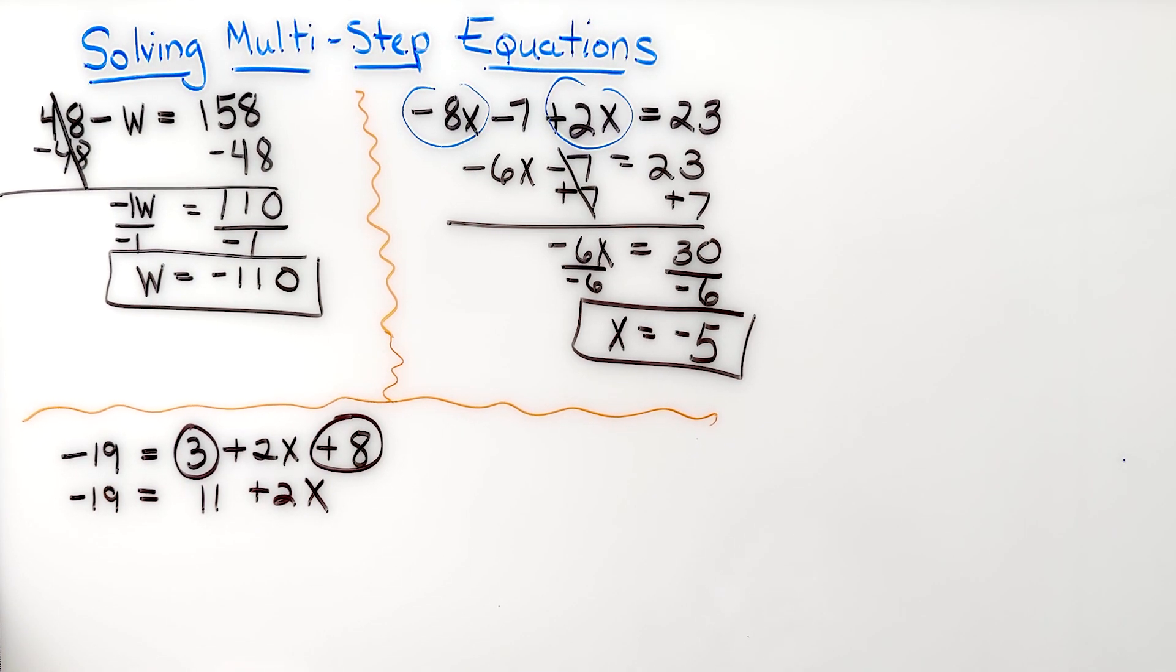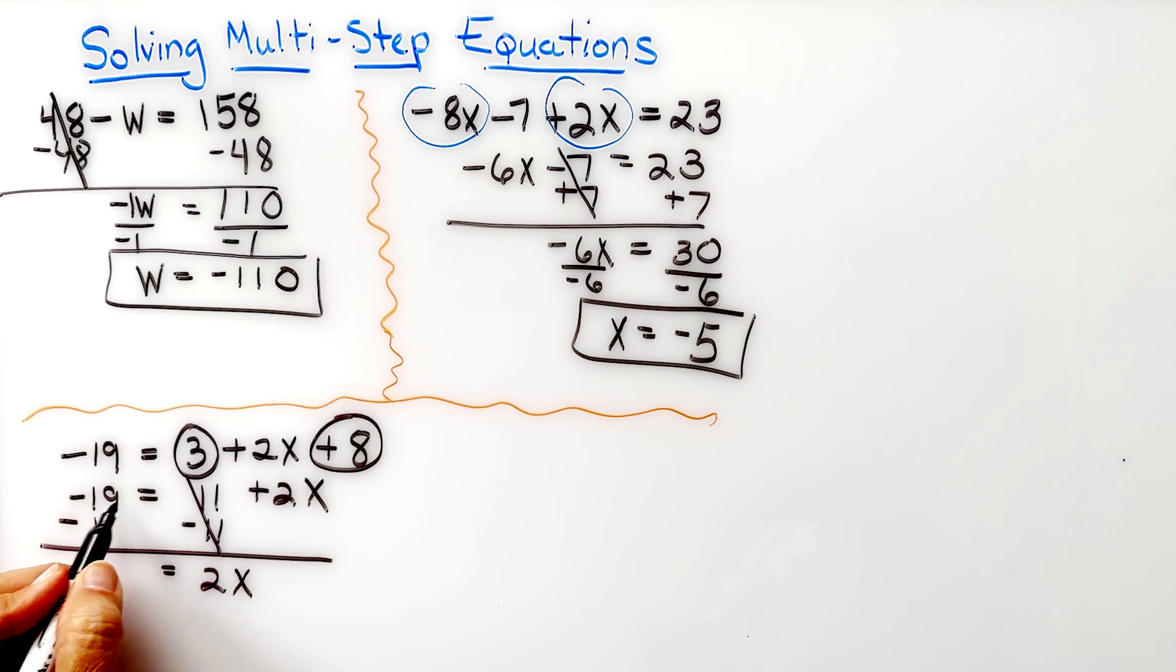Remember, our goal is always to get the variable by itself, so we're going to subtract 11 from both sides. When I do that, the 2x is now alone, and this is like negative 19 plus negative 11 or negative 19 minus 11. When we put those together we end up with negative 30.